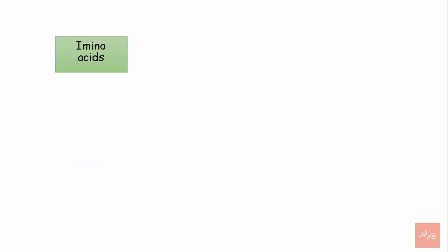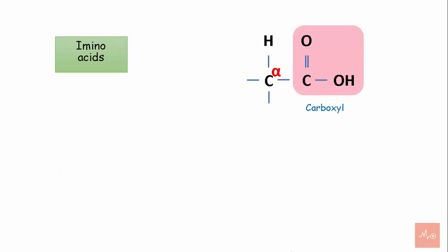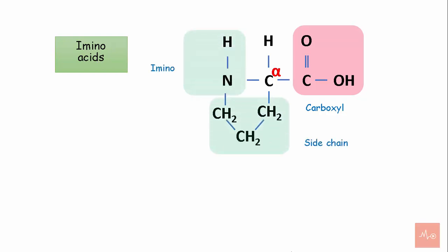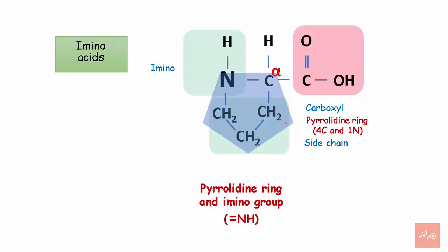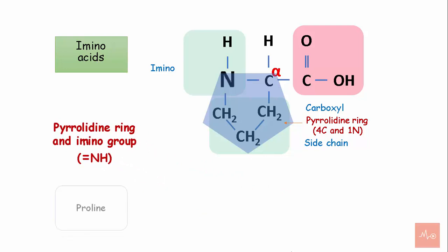Imino acids contain a carbon skeleton and one carboxyl group, but instead of an amino group, they have an imino group. The difference between amino acids and imino acids is the bonding of the nitrogen in the group. The nitrogen forms a bond with hydrogen and a three-carbon side chain, resulting in a pyrrolidine ring formation. This ring contains four carbons and one nitrogen. The presence of the pyrrolidine ring and imino group is characteristic of the amino acid proline.